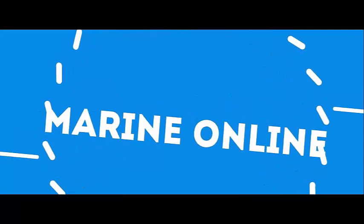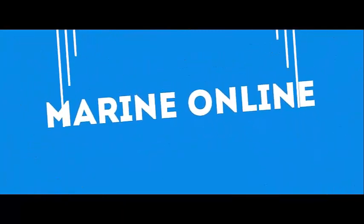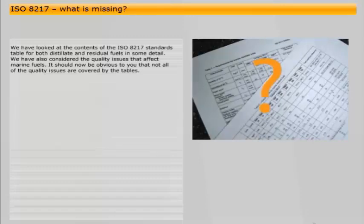The learning objective of this chapter is that the learner will realize that not all of the quality issues are covered by the current fuel standard. We have looked at the contents of the ISO 8217 standards table for both distillate and residual fuels in some detail. We have also considered the quality issues that affect marine fuels. It should now be obvious to you that not all of the quality issues are covered by these tables.